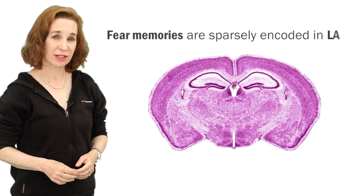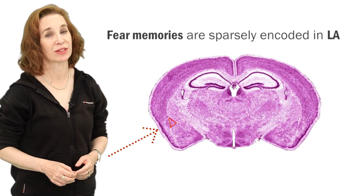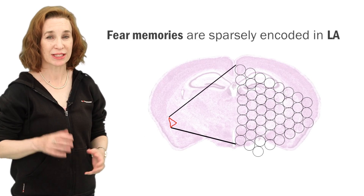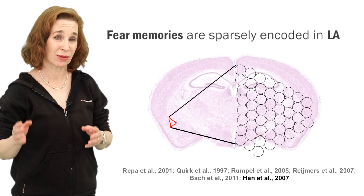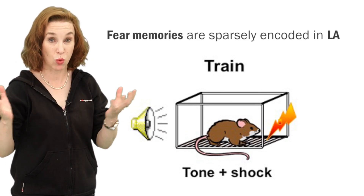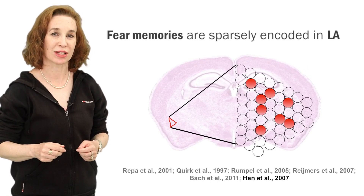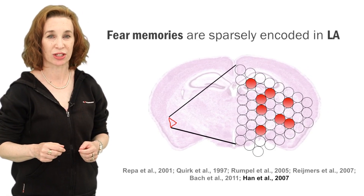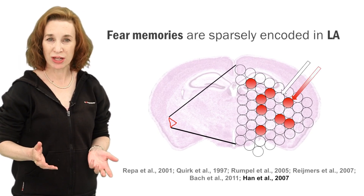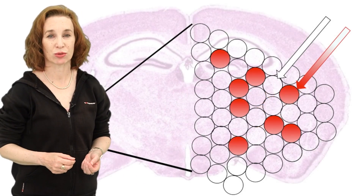Interestingly, evidence from electrophysiological and cellular imaging studies shows that only a portion of LA neurons are involved in any one given memory. While several labs have shown that roughly 70% of LA neurons receive the necessary sensory input — responding both to the tone and the shock, and therefore correctly wired to become part of a memory trace — only about 25% of these neurons exhibit auditory fear conditioning-induced plasticity, or become part of the memory trace. We wondered why one neuron, rather than its neighbor, becomes recruited or allocated to the memory trace.